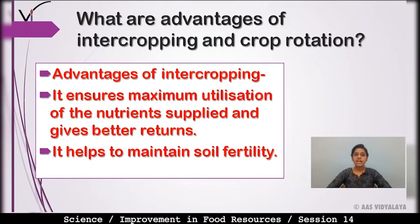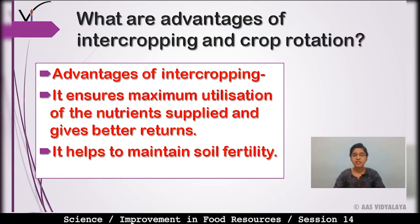Your next question is: What are the advantages of intercropping and crop rotation? For intercropping: it ensures maximum utilization of nutrients supplied and gives better returns. Intercropping mein crops ko definite pattern mein grow karaya jata hai jisse better returns milte hain aur nutrient supply valid way mein ho pati hai. It helps to maintain soil fertility.